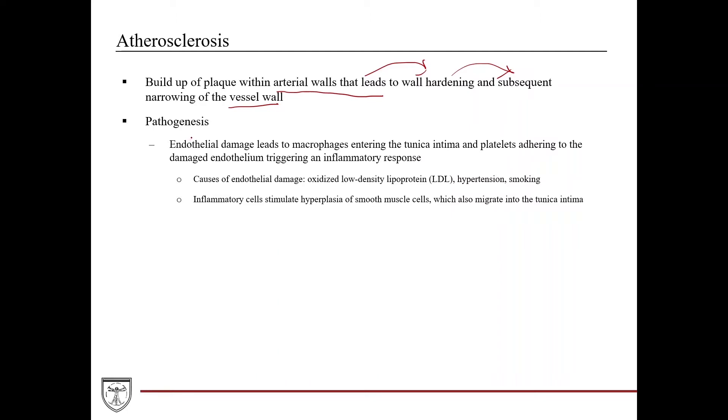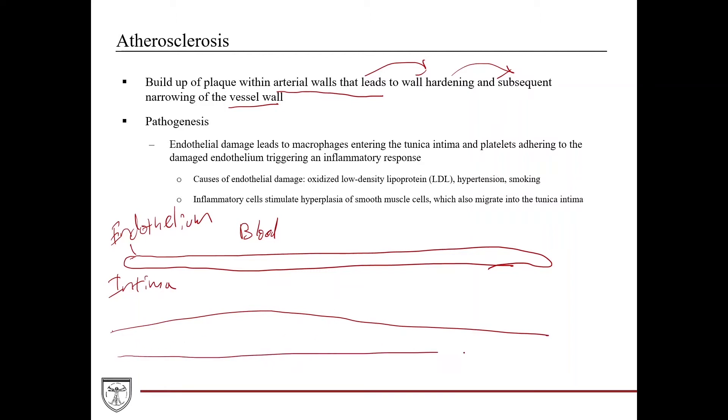So how this occurs, the pathogenesis. So this will represent the endothelial layer. So this is the endothelium. This would be the blood here, the lumen of the vessel here. You have the intima here, and then you have the smooth muscle cells within this region here. So this is the media.